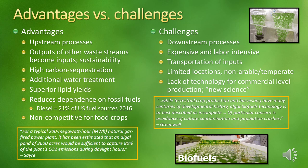For a typical 200-megawatt-hour natural gas-fired power plant, it has been estimated that an algal pond of 3,600 acres would be sufficient to capture 80% of the plant's CO2 emissions during daylight hours. Wastewater from treatment centers would undergo additional cleansing since microalgae remove excess nutrients as part of their growth cycle. Microalgae also have superior lipid yields compared to terrestrial food crops, and at large-scale operation this could reduce dependence on fossil fuels. There are many vehicles that use diesel, especially commercial fleets like trucking companies, USPS, U-Haul, and buses.